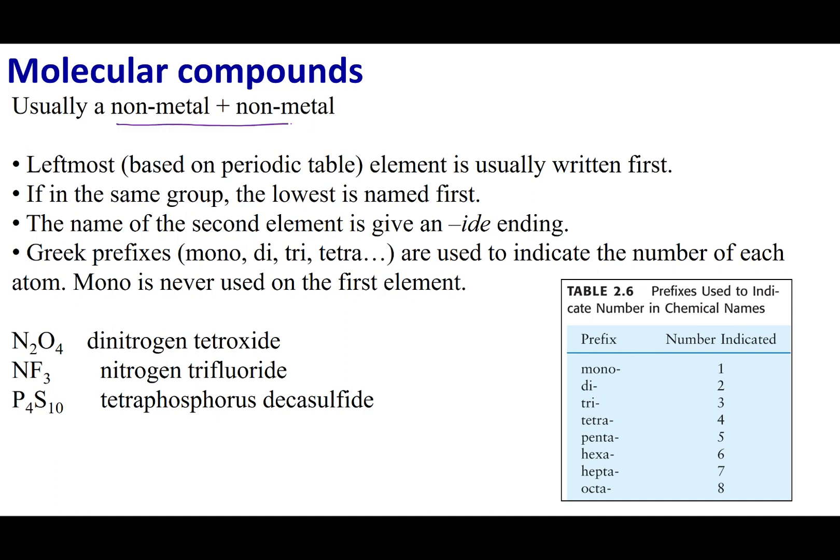Now these are made from non-metals interacting with non-metals. So if you remember, a non-metal tends to make negative ions. If you put two non-metals together, you can't act ionically. Two negatives are not going to come together - they're going to repel each other.